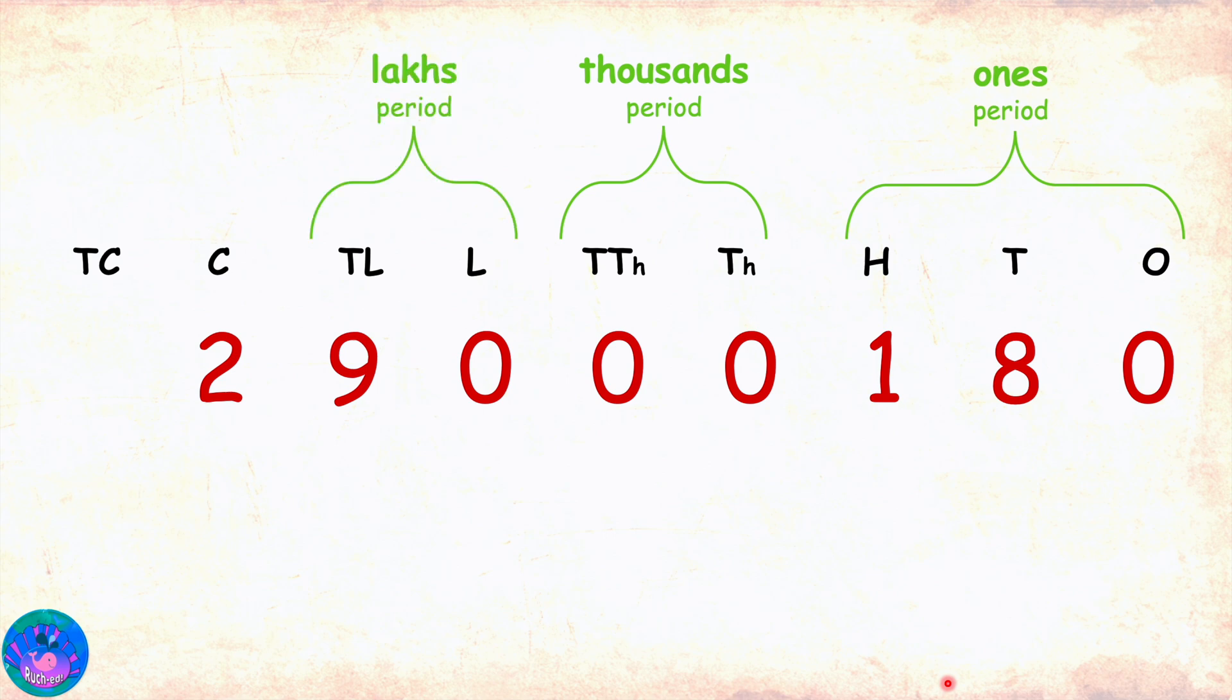Here's another one. Two, nine, zero, zero, zero, one, eight, zero. Eight digits, which are using ones through crores places. We will mark the periods, ones period, thousands period, lakhs period, and the crores period, which has only one digit.